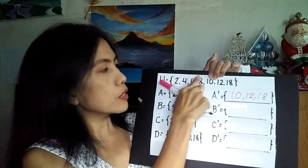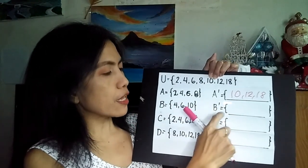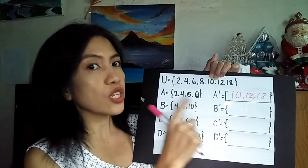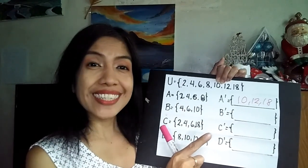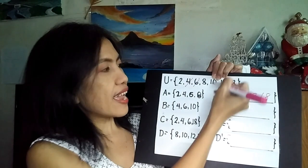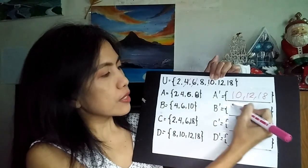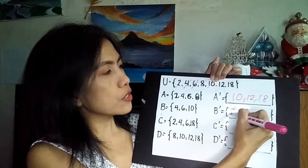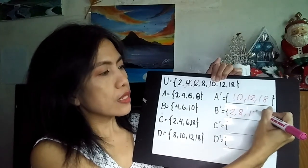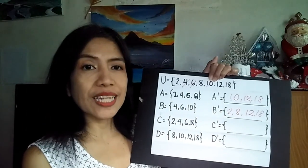Next, we're looking for the B complement. The given is 4, 6, and 10. So let's cross out 4, 6, and 10. The elements that are the complements are 2, 8, 12, and 18. That's how to get the B complement.